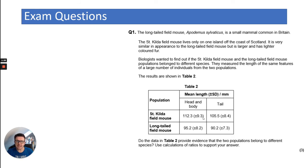Now, the question says, do the data in table two - notice it's bold, Table two is bold, so you've got to use those results - provide evidence that the two populations belong to different species. Then goes on to say, use calculations of ratios to support your answer. So you're going to look at ratios between St. Kilda and long tailed. Sorry, the ratios of the St. Kilda head and body to tail, the long tail field mouse head, body to tail.